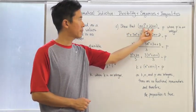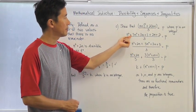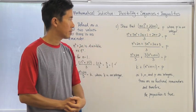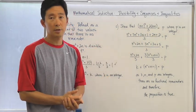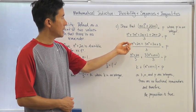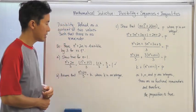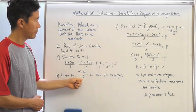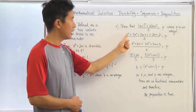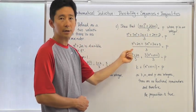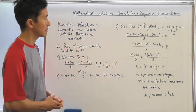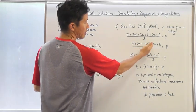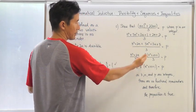I can expand this and write: n cubed plus 3n squared plus 3n plus 1 plus 2n plus 2, divided by 3, equals p. I need to show this is true. Using my assumption that n cubed plus 2n divided by 3 equals k, I combine terms to get n cubed plus 2n plus 3n squared plus 3n plus 3, all divided by 3, equals p.